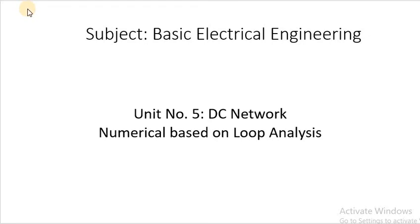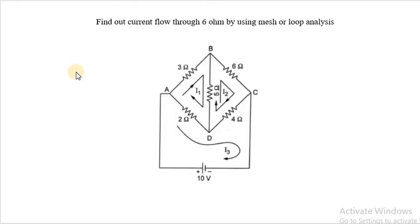Good morning friends. Today we will see a numerical based on loop analysis of a purely resistive DC network. We have to find out the current flow through a 6 ohm resistor by using mesh or loop analysis. Loop is also called as a mesh, so this analysis method is also called as mesh analysis.